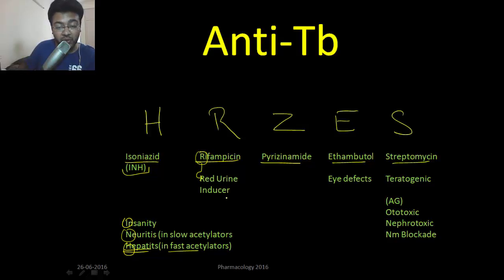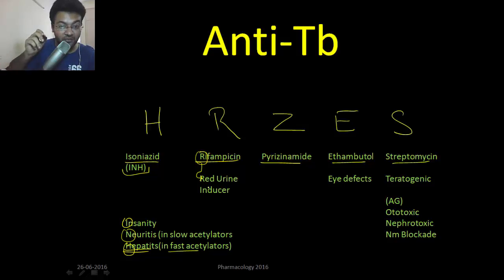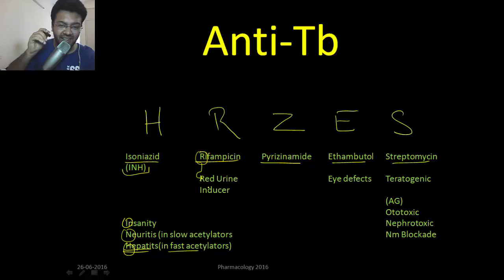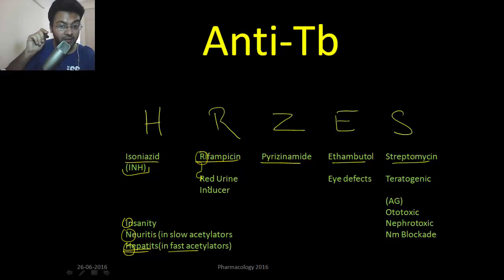The main side effect of rifampicin is red-colored urine. Rifampicin is an enzyme inducer — remember the mnemonic 'Priyanka Chopra BRA,' where R was rifampicin. Clinically, if a lady is taking oral contraceptive pills and you start her on anti-tubercular treatment, rifampicin will induce the metabolism of OCPs and she might get pregnant, so ask her to use a condom too.